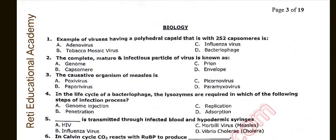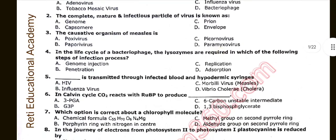Question number three: The causative organism of measles is. The correct option is D: Paramyxovirus is the causative organism of measles. Question number four: In the life cycle of a bacteriophage, the lysosomes are required in which of the following steps of the infection process? The correct option is B: Replication.